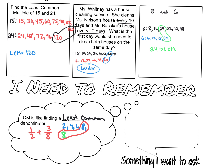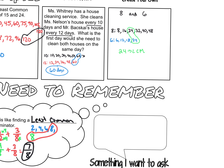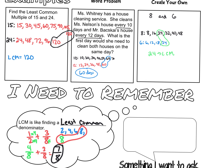If we were going to add those fractions, 3 eighths would stay 3 eighths because 8 is already our denominator. We would change 1 half into eighths by multiplying 2 times 4, and also multiply the numerator by 4, giving us 4 eighths. So we'd have 4 eighths plus 3 eighths — the denominator stays the same — and 4 plus 3 is 7, giving us 7 eighths. That's probably the most common place you use least common multiple, but there are also situations with repeated items where you can use it too.